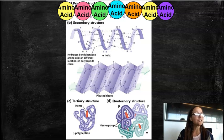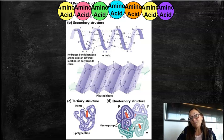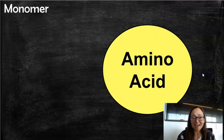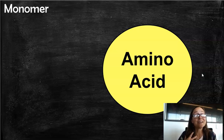When you change a protein shape, it could possibly lose its function and stop working. So when we look at this monomer, the building block of proteins, it is an amino acid.